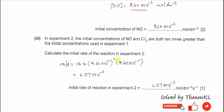In experiment 2, the initial concentrations of NO and Cl₂ are both 10 times greater than in experiment 1. So the concentration becomes 4.6 × 10⁻² mol dm⁻³. Substituting this concentration into the rate equation together with the rate constant gives a rate of 2.57 × 10⁻³ mol dm⁻³ s⁻¹ for experiment 2.